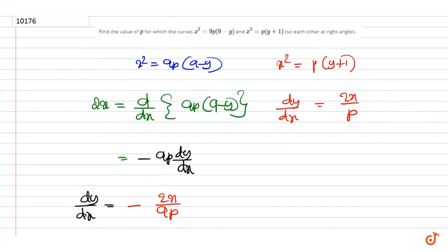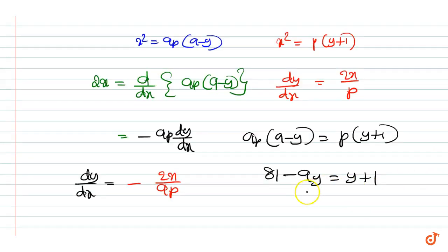The point of intersection of the curves is given by equating these two equations. We get 9p(9-y) = p(y+1), which we can write as 81-9y = y+1. Therefore, 80 = 10y, giving y = 8.